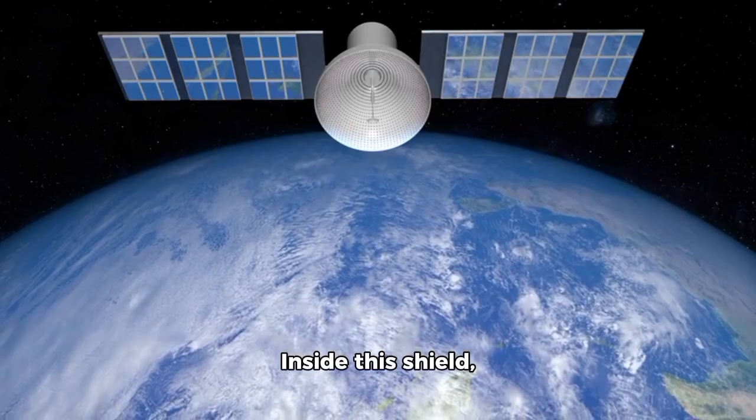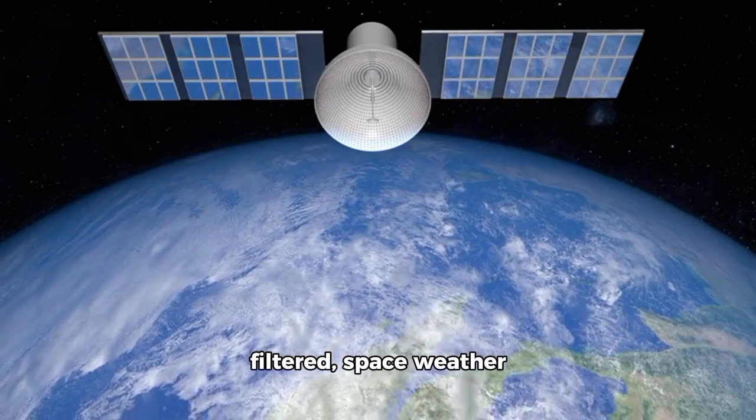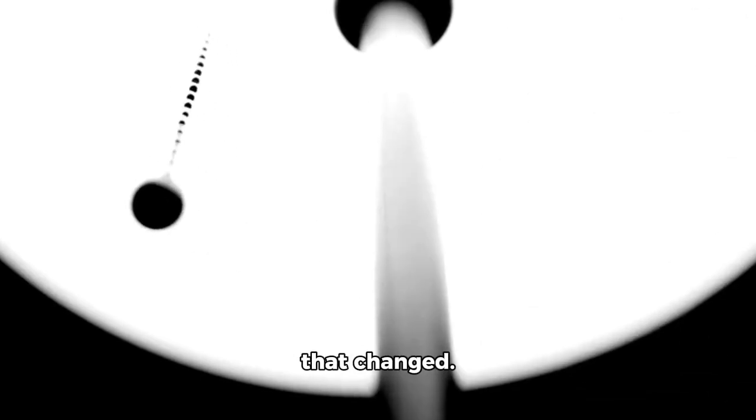Inside this shield, conditions are stable. Radiation is relatively filtered, space weather is manageable, and there is less of it. Yet, from the moment Voyager 2 emerged, that changed.